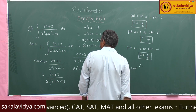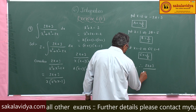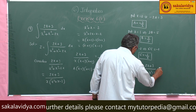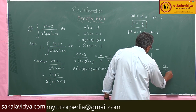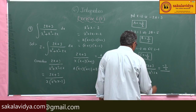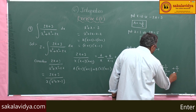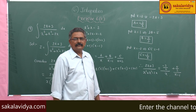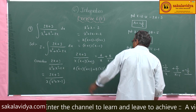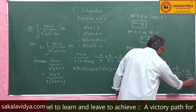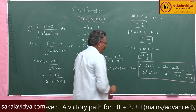Now, writing the partial fractions: (2x + 3)/(x³ + x² - 2x) equals (-3/2)/x + (5/3)/(x - 1) + (-1/6)/(x + 2). So these are the partial fractions. Now we have to integrate them.